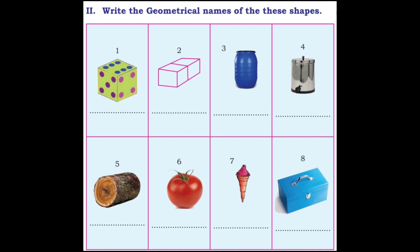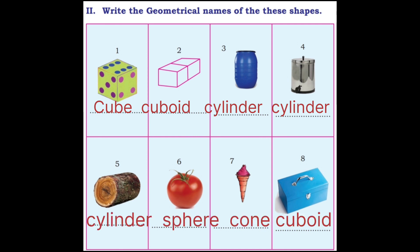Second question: write the geometrical names of these shapes. First one: cube shape. Second one: cuboid shape. Water drum is in cylinder shape. This box is in cylinder shape. Fifth one: also in cylinder shape. Tomato — it is in sphere shape. Seventh one: ice cream is in cone shape. Eighth one: this box is in cuboid shape. Identify which geometrical shape each object is and write it down.